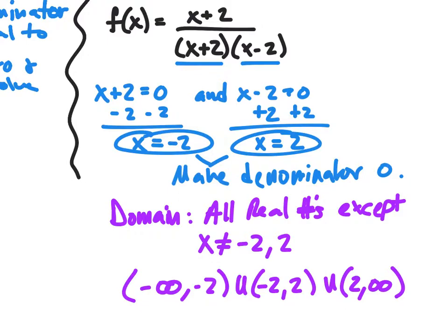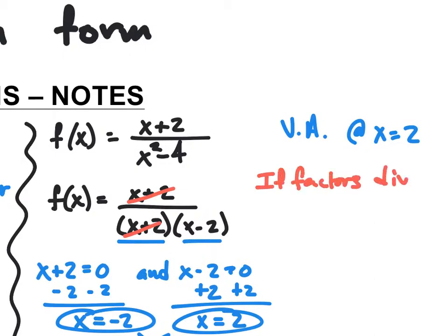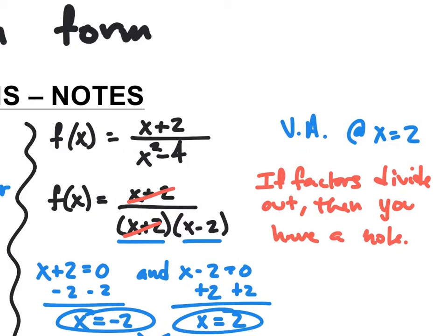Now let's figure out our vertical asymptotes — and there's a trick to this. Vertical asymptotes do occur when the denominator is zero; however, the only one we have here is at x equals two. The reason is that the x plus two factors divide out. When factors divide out, you have a hole. So the only vertical asymptote is at x equals two, and I have a hole at x equals negative two.